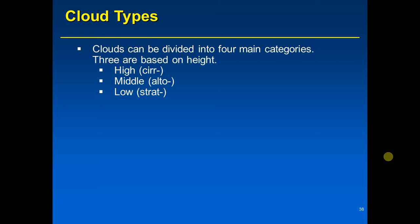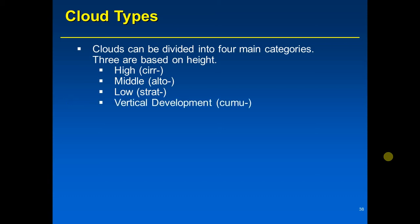The fourth category is vertical development, and those clouds begin with the Latin prefix 'cumul-'. These clouds are interesting because they can exist in more than one height layer — they can start in the low cloud region and grow vertically into the high cloud region. Because they exist in multiple height regions, they have their own category.